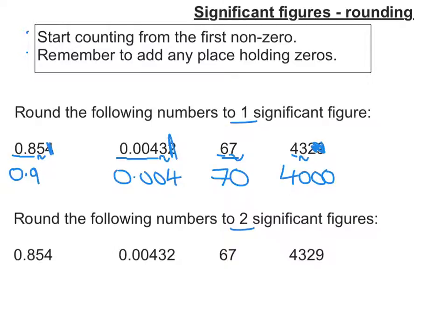Right, now we're to two significant figures. So the eight and the five and the four tells me if I round up or stay the same. So I stay the same, so it's 0.85.